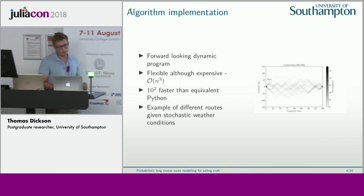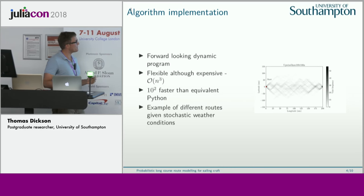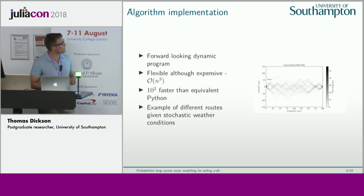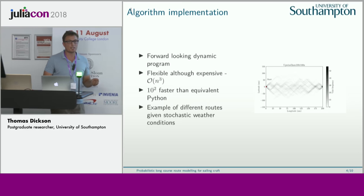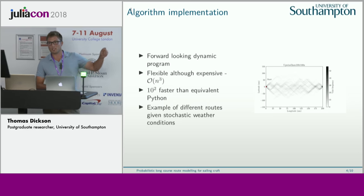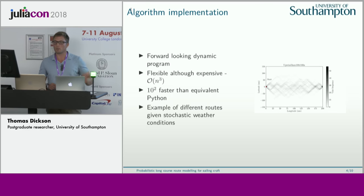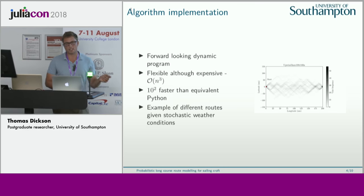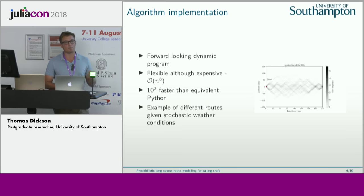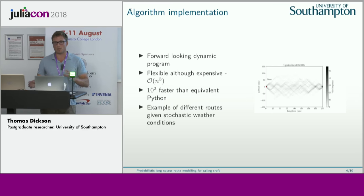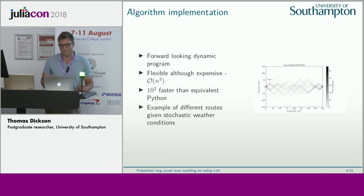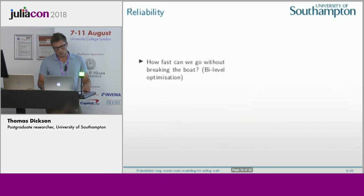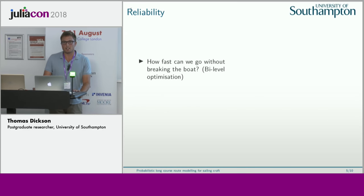Here's an example of different routes taken given stochastic weather conditions. You can see it's modeling different routes that can be taken across the domain, which is useful when racing because you can test different hypotheses about wind behavior and explore different parts of the domain.